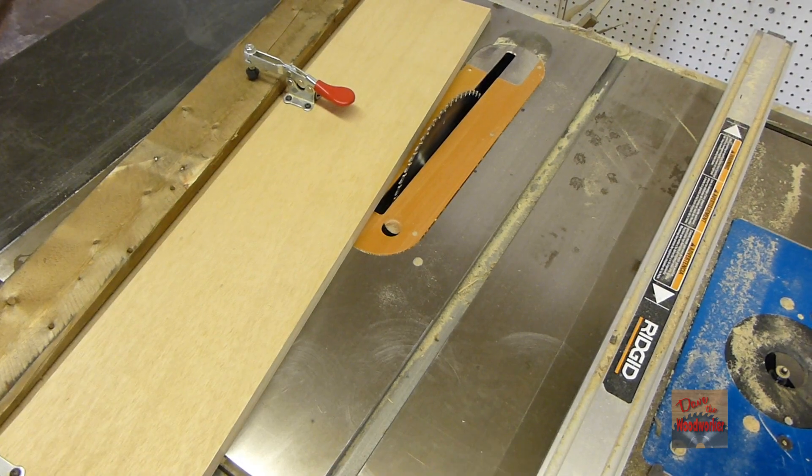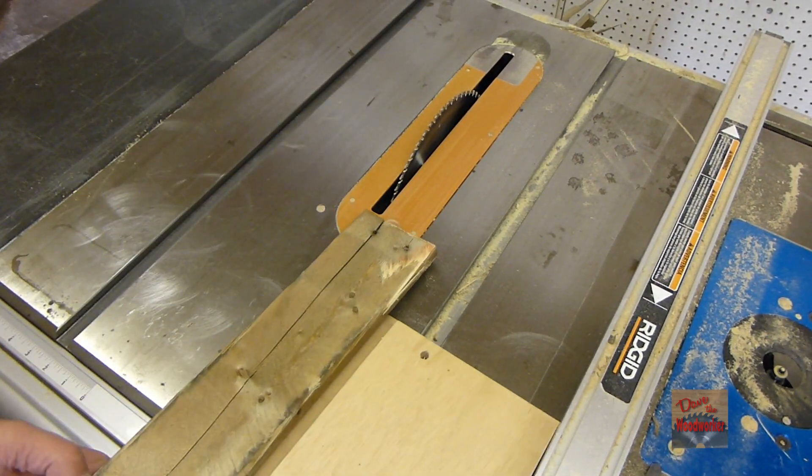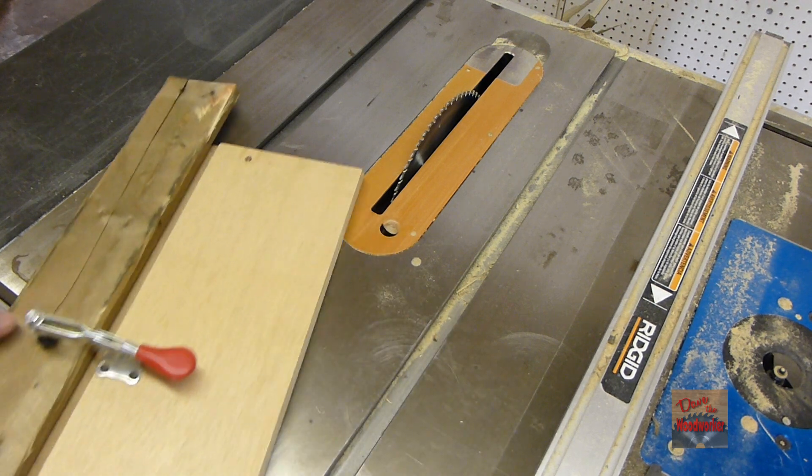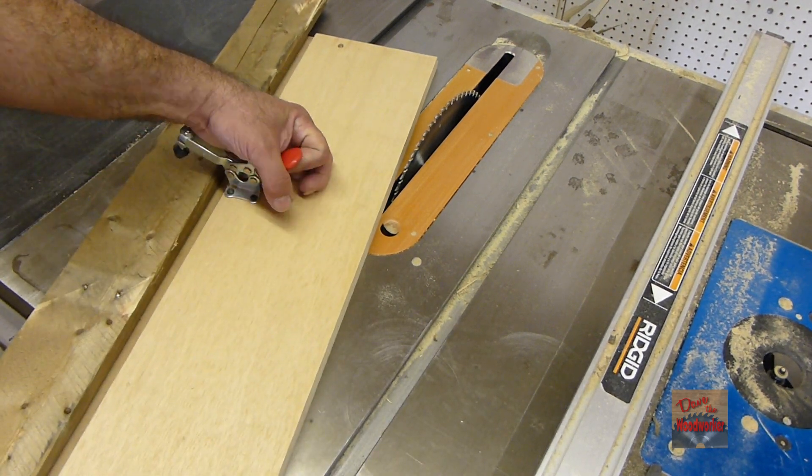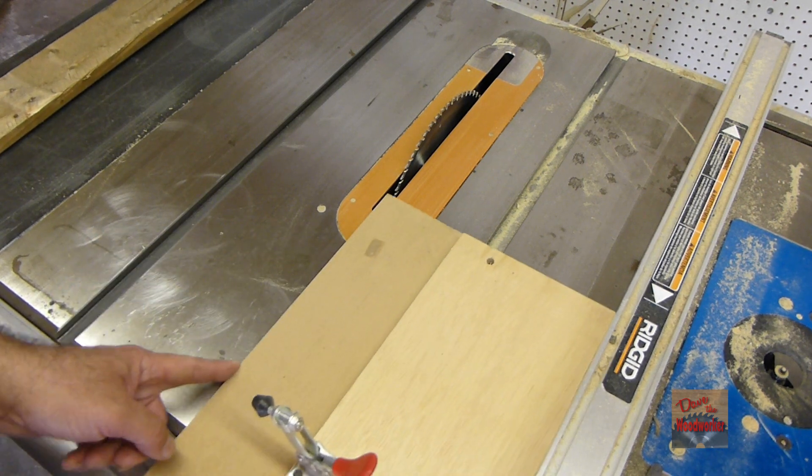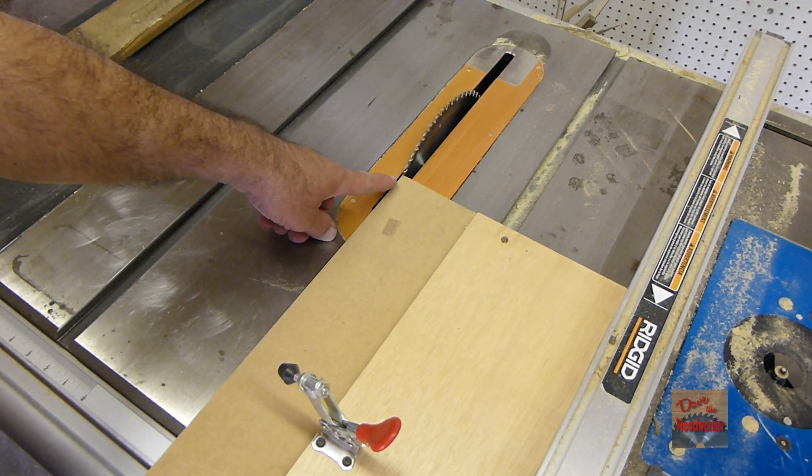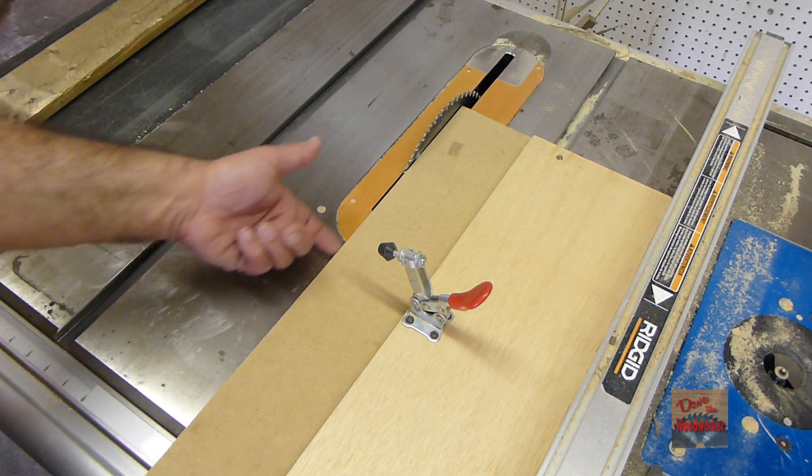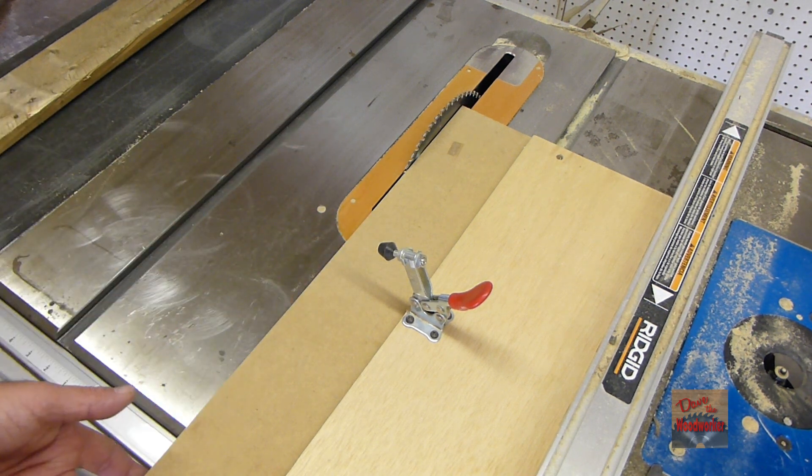And then you want to adjust your fence. Let me take these back off so I can show you. What you want to do is adjust your fence to the width of the blade. Remember we're just going to be cutting on the outside part here.